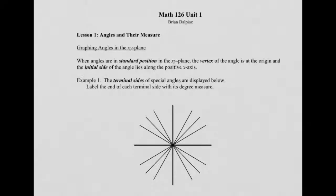Trigonometry, Math 126, here we go. Unit 1, Lesson 1 just deals with angles and their measure. Trigonometry is really the study of triangles, so let's start with the idea of an angle.